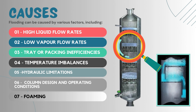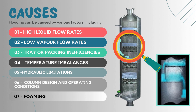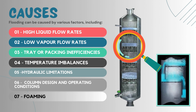The next cause for flooding is temperature imbalances. Significant temperature variations across the column can disrupt the equilibrium between liquid and vapor phases, leading to flooding. This can occur due to inadequate or uneven heat input, poor temperature control, or process disturbances.